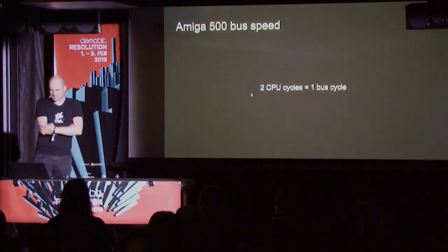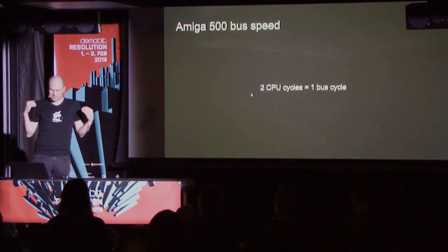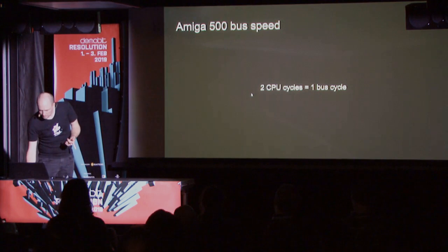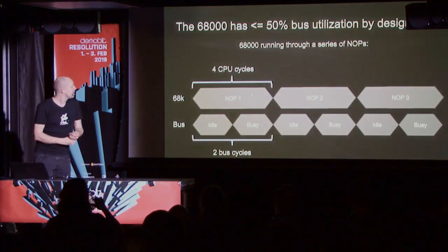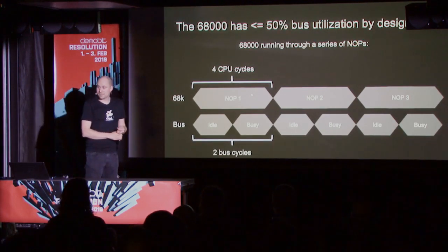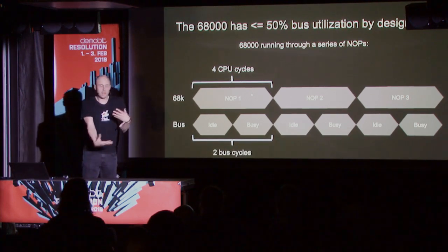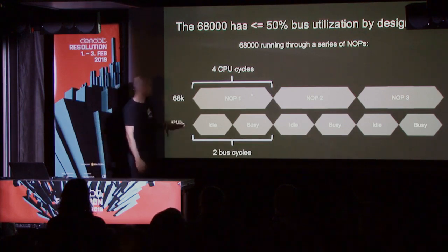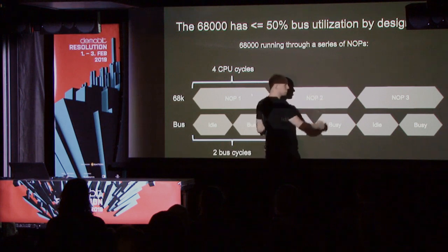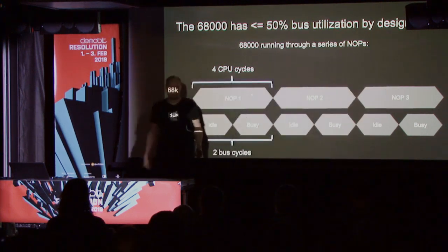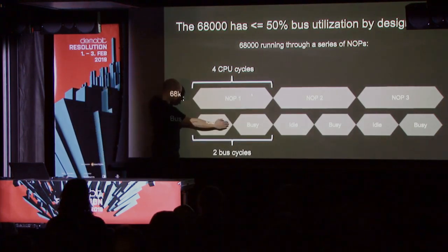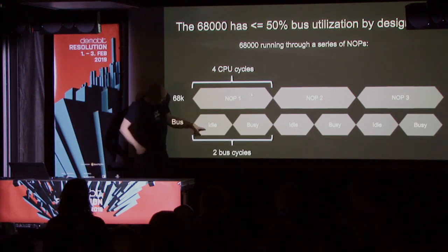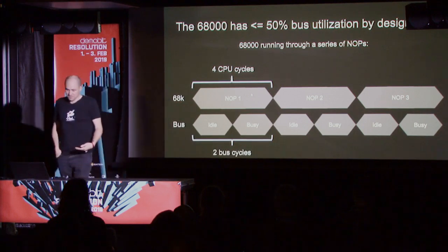When they designed the Amiga 500, they designed it so the clock of the bus runs at one bus cycle equals two CPU bus cycles. There's a very good reason for that — the 68K processor can't really use the bus 100% effectively. For example, as the 68K runs through a series of NOPs, each NOP is four cycles. If we look externally at what's happening on the bus, for the first half of a NOP the CPU is doing preparatory things, and it's only during the last two cycles when it shows bus activity that might interfere with something else.